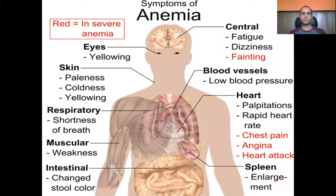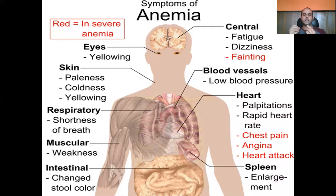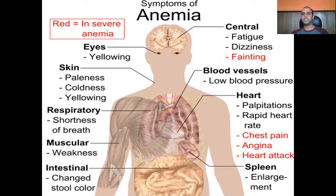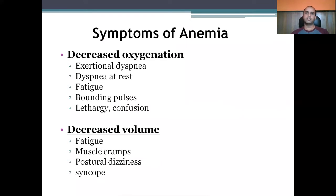Looking at this chart showing the symptoms of anemia: those marked in red are seen only in severe anemia. Yellowing of the eyes (scleral icterus) and yellowing of the nail beds are typical signs. Skin pallor, coldness, and shortness of breath are present. Muscular weakness is seen, and in the CNS, dizziness, fatigue, and fainting can occur. Low blood pressure, palpitations, rapid heart rate, chest pain, angina, and spleen enlargement can also be seen.